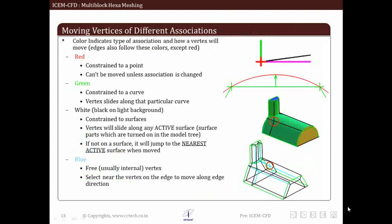There is some color code assigned to entities of blocking to check whether it is associated or not. We will notice that they appear in either of four colors: red, green, white—which is actually black on light background—and blue. Red color indicates that vertex is constrained to a point and can't be displaced unless association is changed or removed. Green color indicates that vertex is constrained to a curve and that vertex can slide along that particular curve. White—which is black on a light background—indicates that vertex is constrained to surface and that vertex can slide along any active surface, which means any surface part which are turned on in model tree. If not on a surface, it will jump to the nearest active surface when moved. Blue color indicates that vertex is free, meaning that it can move anywhere in space. We have to select a near vertex or edge to move along edge direction.